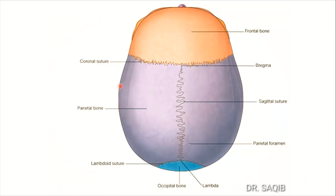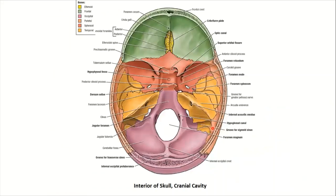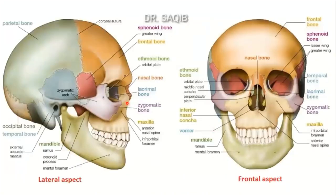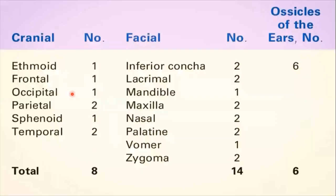The eight bones of the neurocranium are: frontal, parietal, occipital, sphenoidal, temporal, and ethmoidal. Of these, four are single bones — ethmoidal, frontal, occipital, and sphenoidal — and two are paired bones, occurring on each side: temporal and parietal.